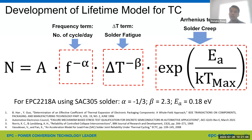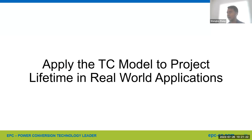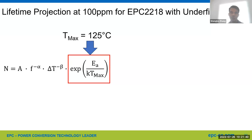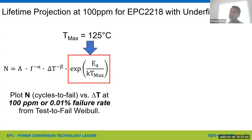Here are the parameters for the lifetime model of EPC-2218 using SRC-305 solder material. To apply the model: assuming T_max is 125°C — the worst case scenario — the Arrhenius term becomes a constant that can be lumped into a coefficient. We can then plot N, the cycles to failure, as a function of delta T at 100 ppm (0.01%) failure rate, collected from the test-to-fail Weibull plot.